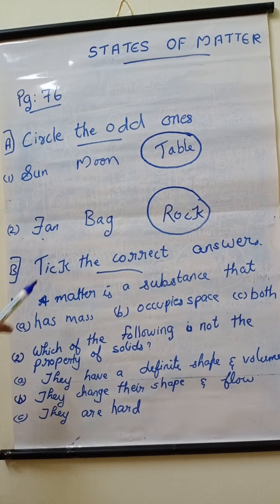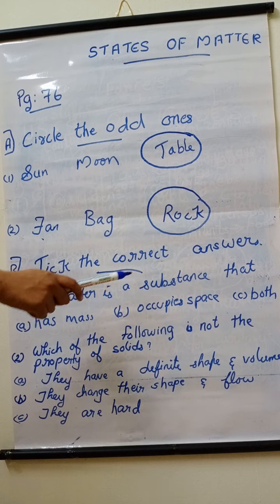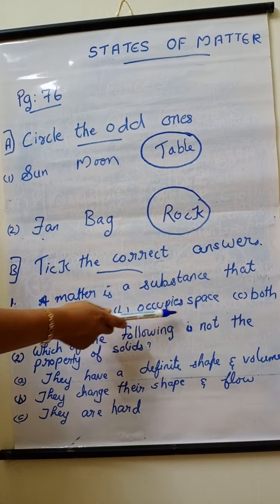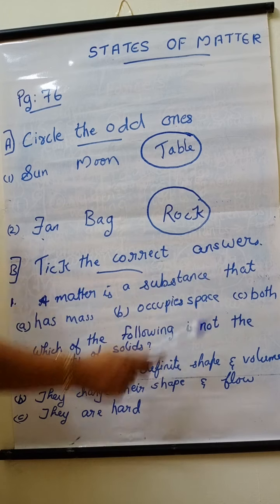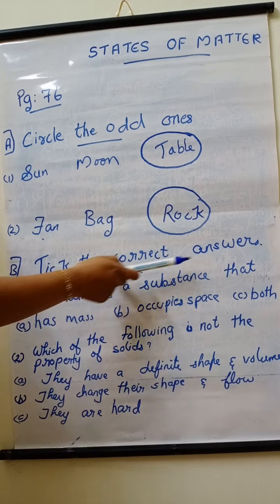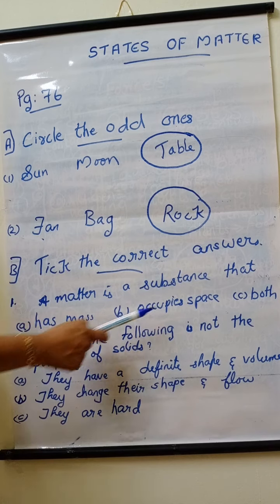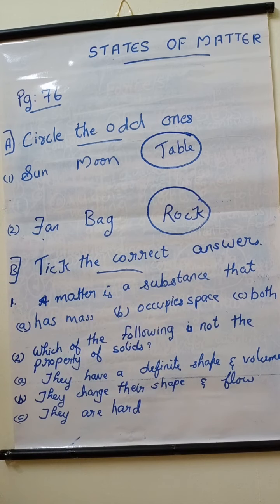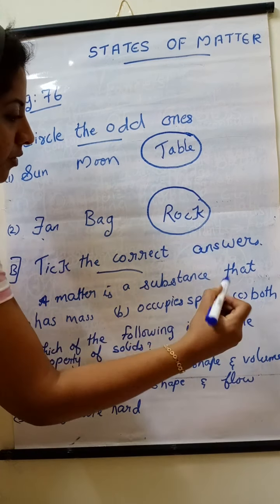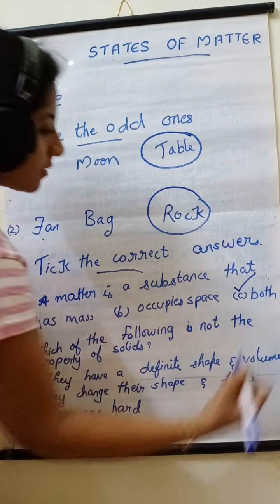Exercise B, take the correct answers. First one, a matter is a substance that — option A has mass, option B occupies space, option C both of these. We know that a matter is a substance that has mass and occupies space. So the answer is option C, both of these.